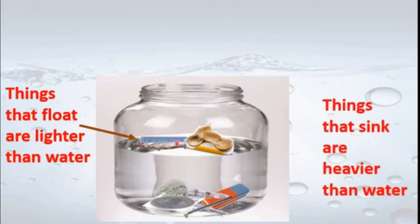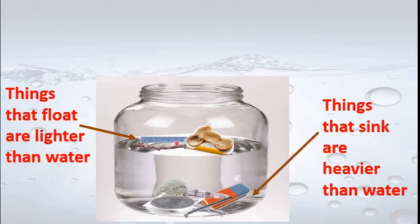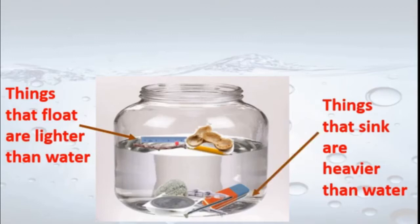Things that sink are heavier than water. The eraser, the metal compass, the iron nail, the one-rupee coin, and the stone are heavier than water, so they sink. By this experiment we understand that lighter things float on water and heavier things sink in water.